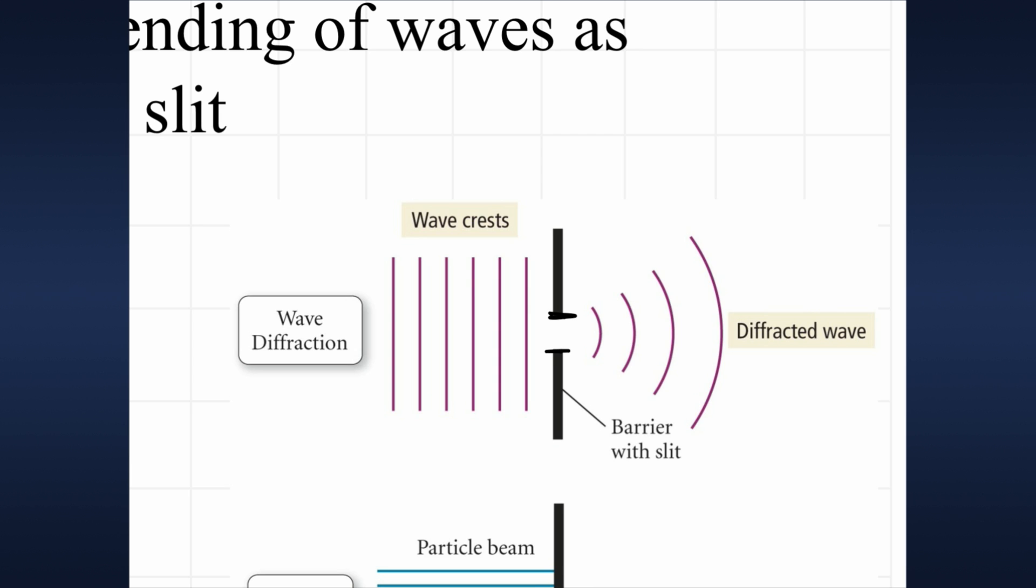When a wave approaches this slit, so this is a peak and then the trough and the peak and the trough and the peak and it hits that, it will bend the wave out. So now it's going to come out of that space and it's going to spread out and it's going to bend. And that's what we call a diffraction, the diffraction of that wave.